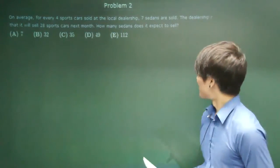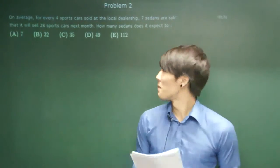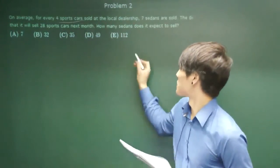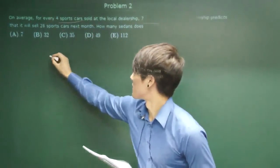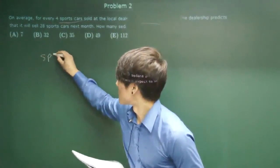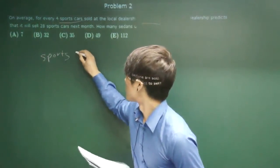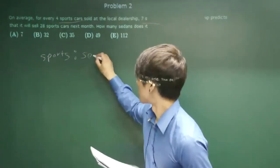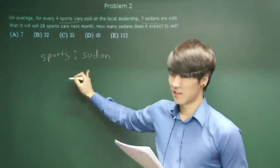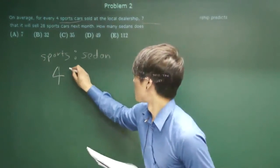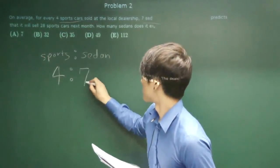This is basically a ratio question. For four sports cars, seven sedans. So sports to sedans, that's the ratio, is four to seven.